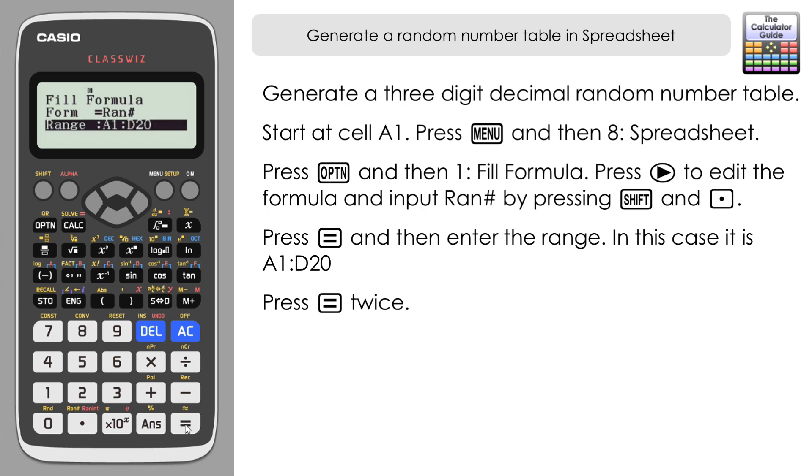Here we have our final random number table. You can see that the random numbers have been generated with three decimal places. Some of them have been put into standard form, scientific notation here, because they're quite small.